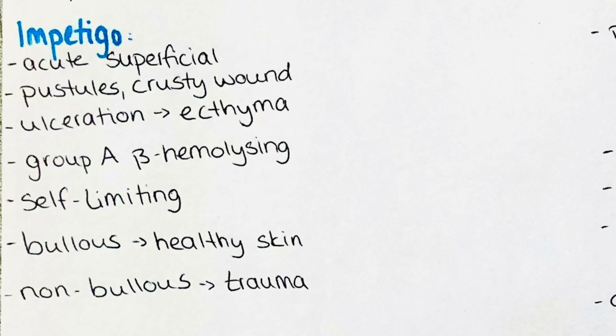The bacteria attach to small wounds and proliferate there. Most often children are affected, but also immunocompromised adults can develop the disease. If a patient has a condition that predisposes them to minor wounds, they are especially at risk of getting impetigo.